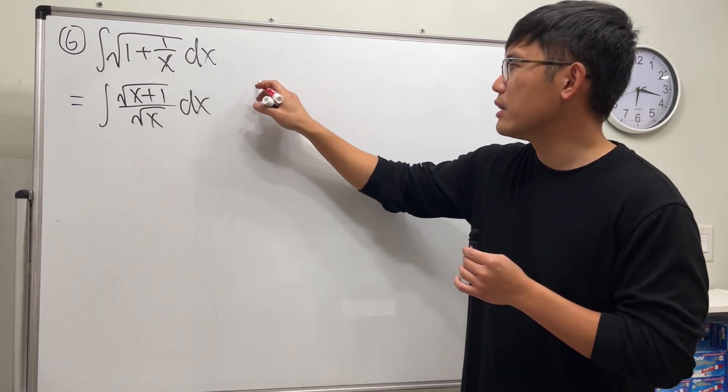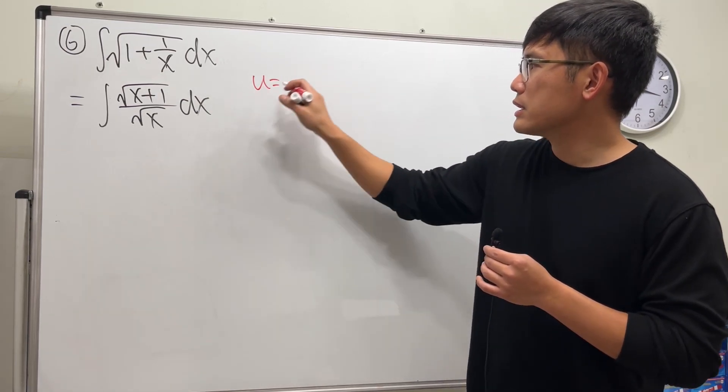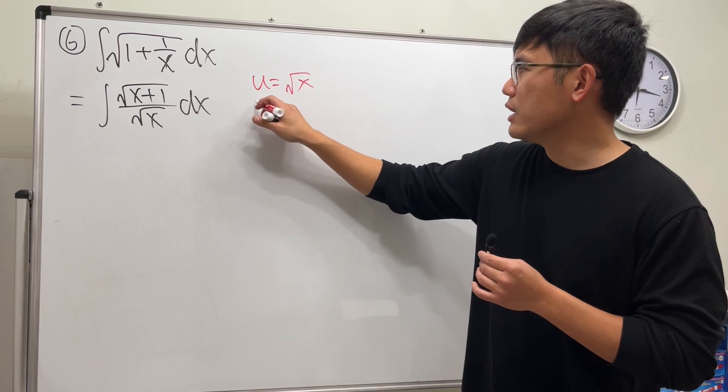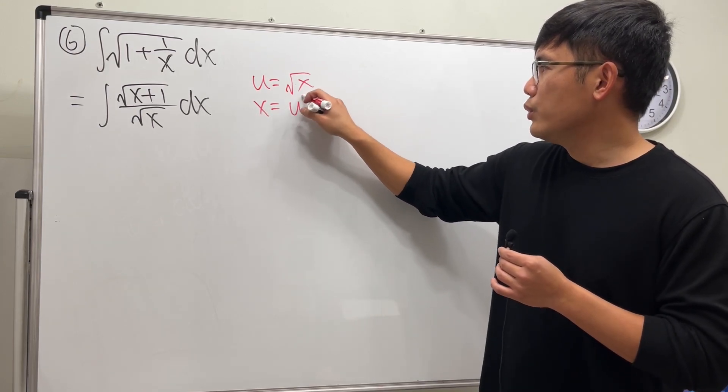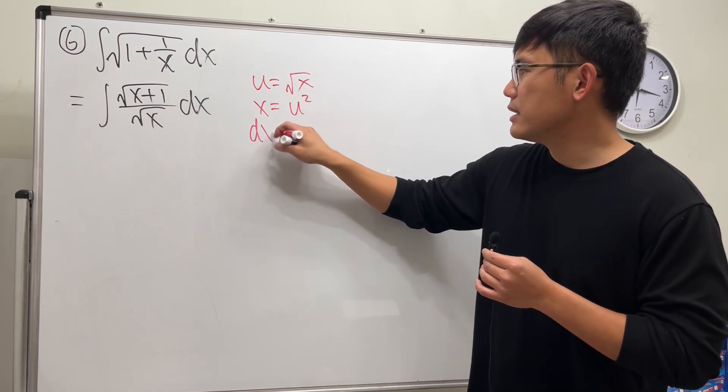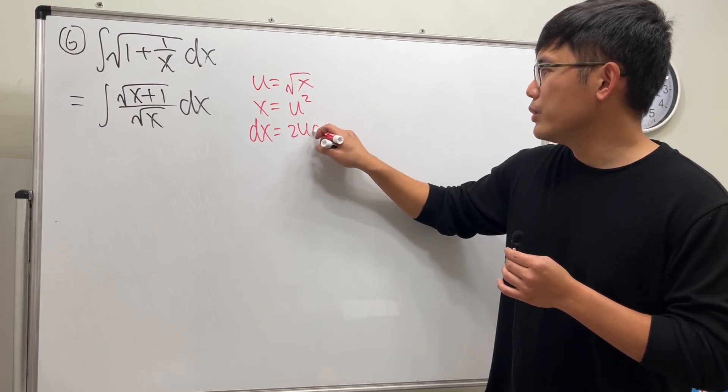And just like what we said earlier, I'm going to let u equal square root of x. And then this gives us x equals u squared and dx will be 2u du.